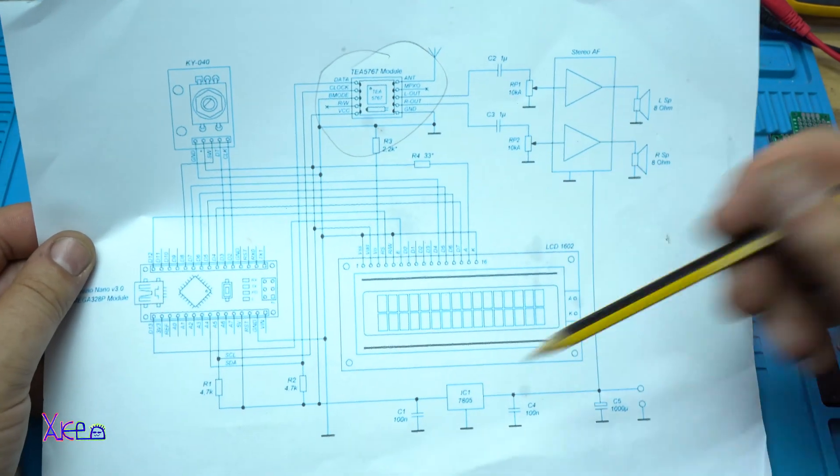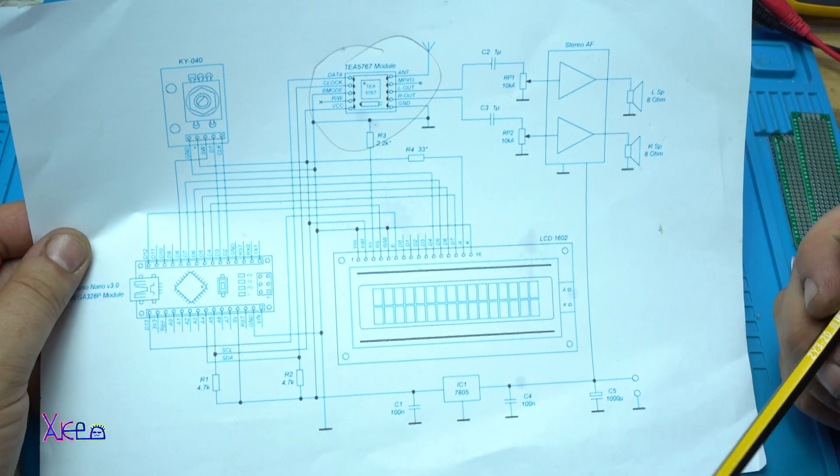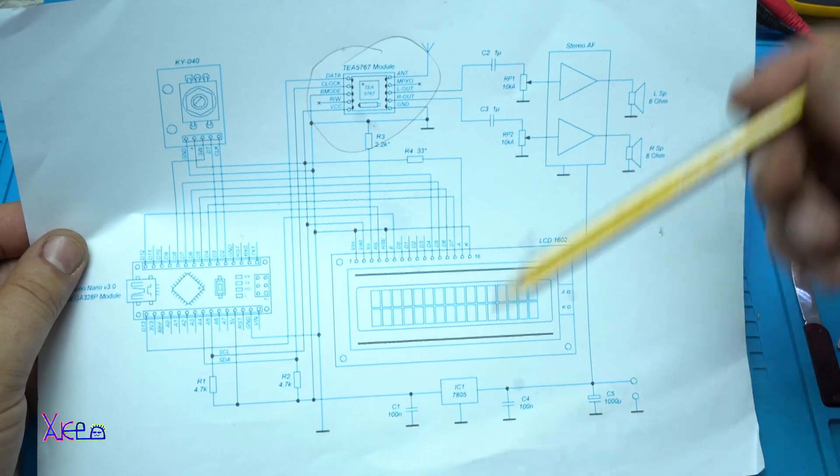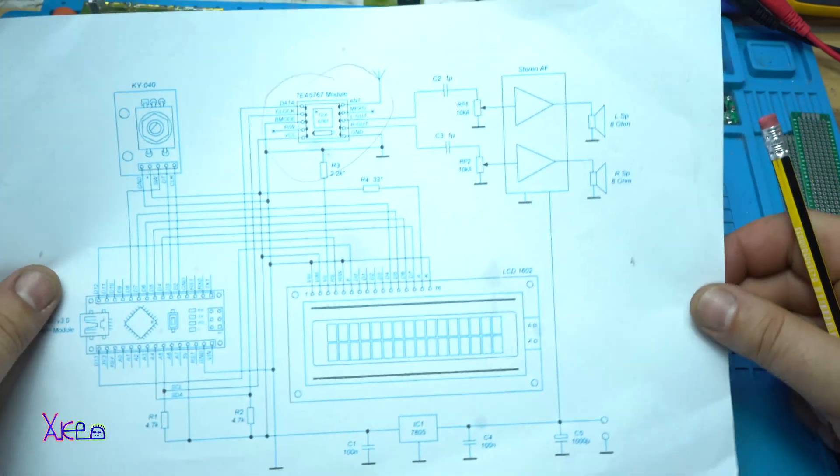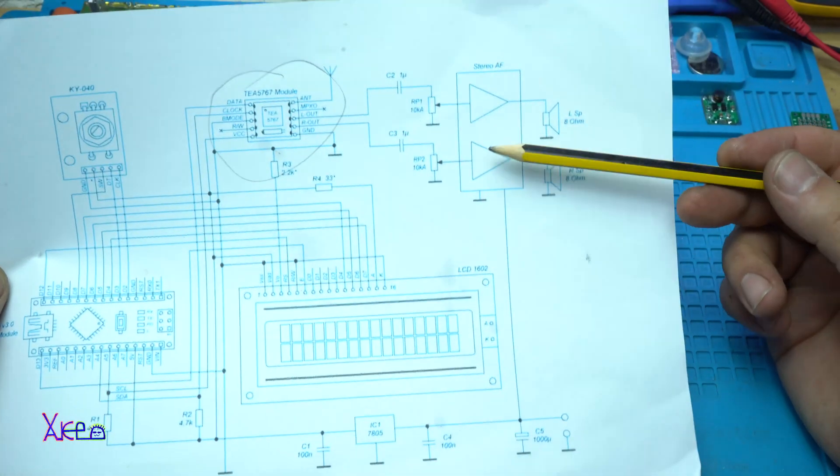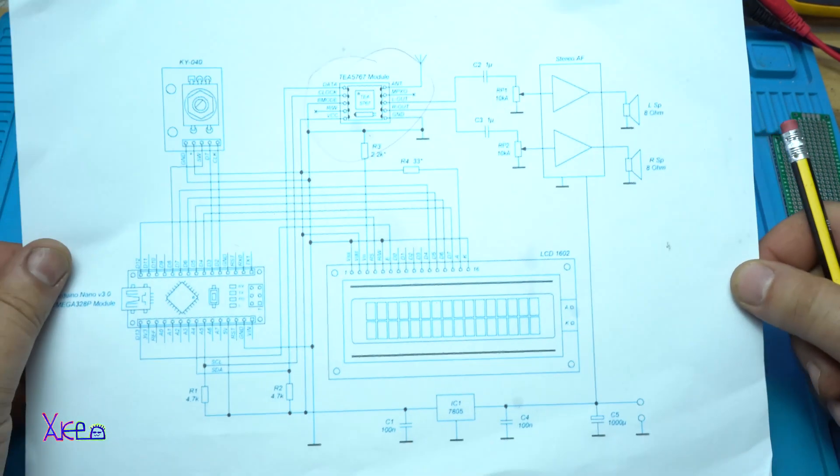The circuit diagram and the code for programming the Arduino will be in description below. And also you will need a small stereo amplifier.